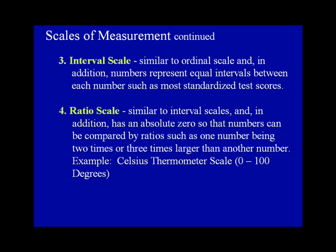And ratio scale, which is similar to interval scales, and in addition has an absolute zero so that numbers can be compared by ratios, such as one number being two times or three times larger than another number. Example: the Celsius thermometer scale, which goes from zero to 100 degrees.